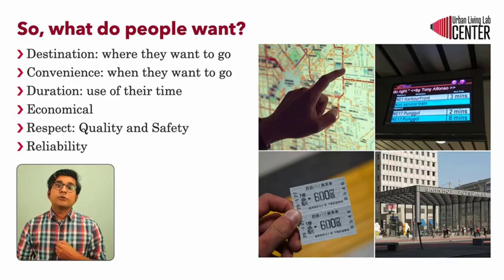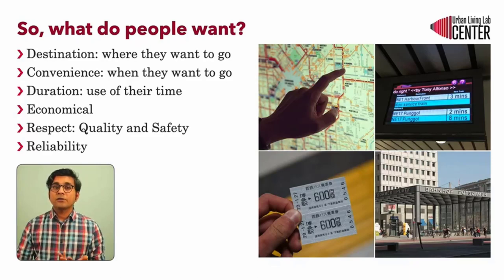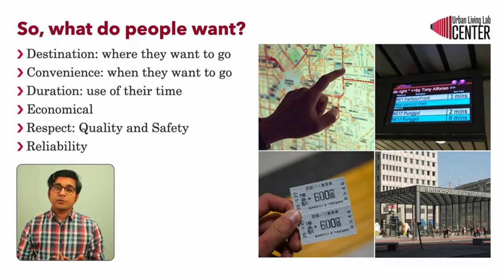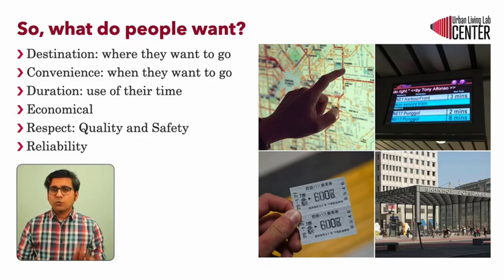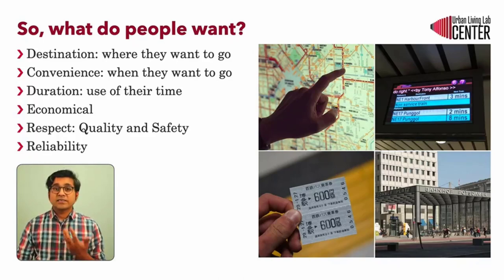Fourth: do they get what they paid for? In other words, is the transit system economical to use? Fifth: how are they treated as a customer and how they feel while using public transport? What amenities do they have as a public transport user? In simple words, respect is shown through transit quality and safety. Sixth is reliability or trust in public transportation operations — is the system going to be on time, and if it is delayed, are passengers being made aware of the delays?